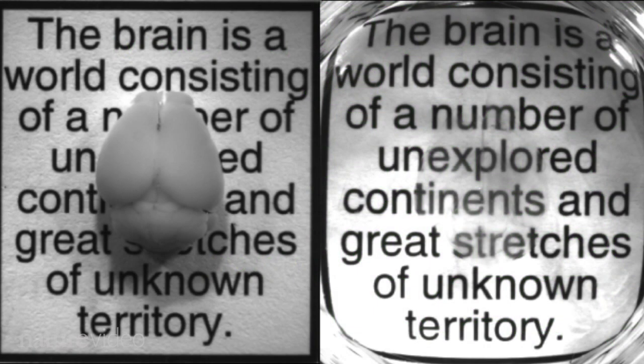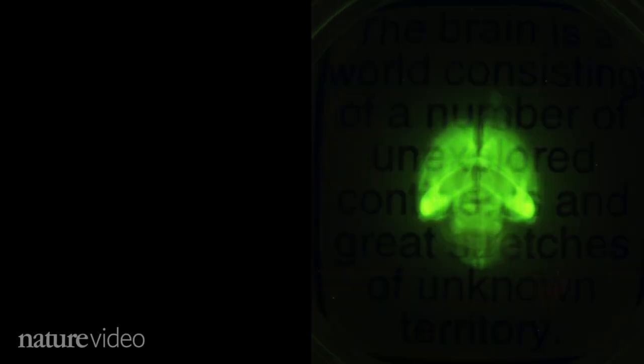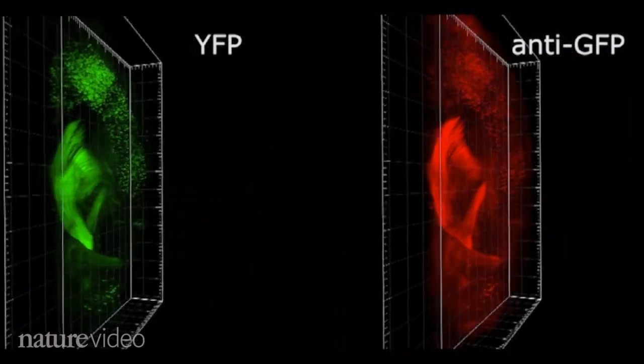This is a mouse brain before and after. The brain is now transparent to light, but it's also permeable to molecules, which means scientists can add molecular markers to highlight specific features.